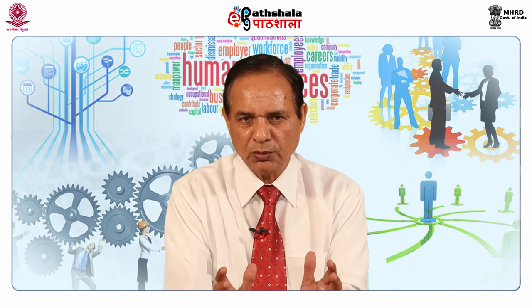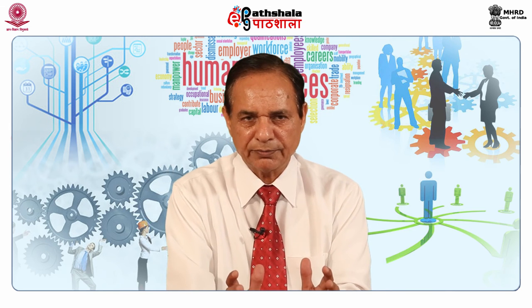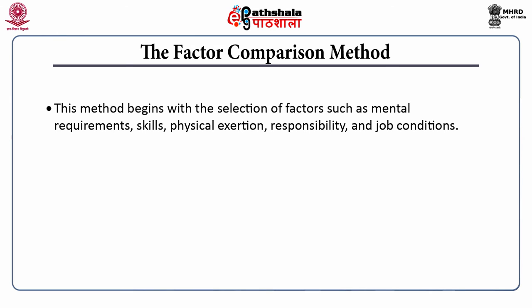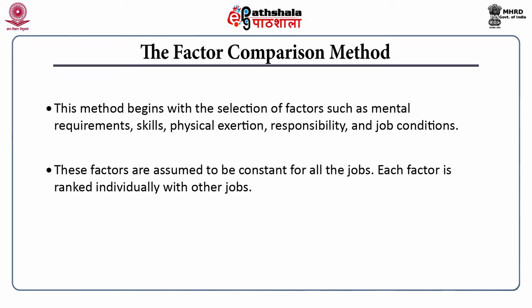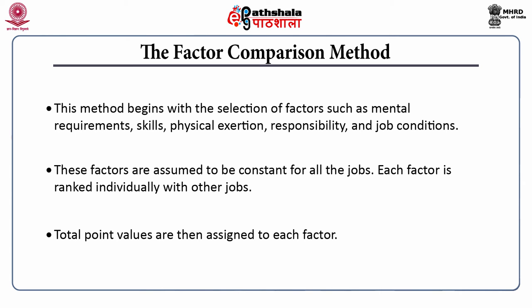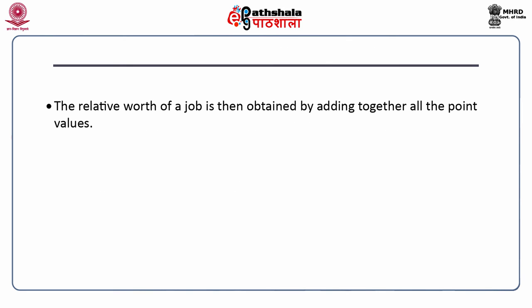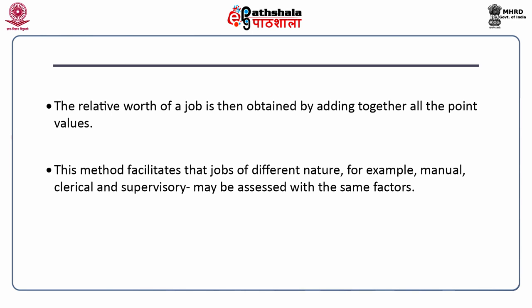The scales are used to measure the job and not the job incumbent. This method begins with the selection of factors such as mental requirements, skills, physical exertion, responsibility and job conditions. These factors are assumed to be constant for all the jobs. Each factor is ranked individually with other jobs, and total point values are then assigned to each factor. The relative worth of a job is then obtained by adding together all the point values.